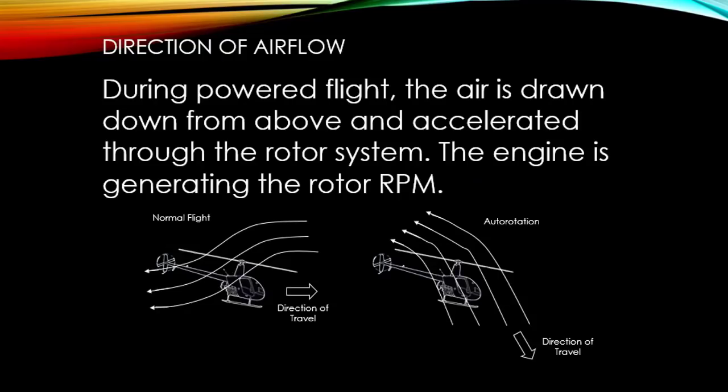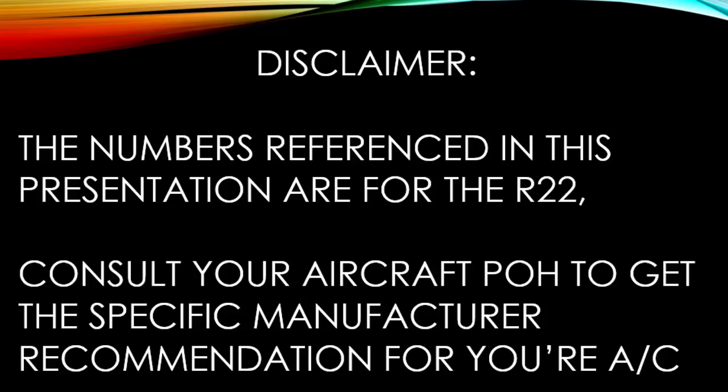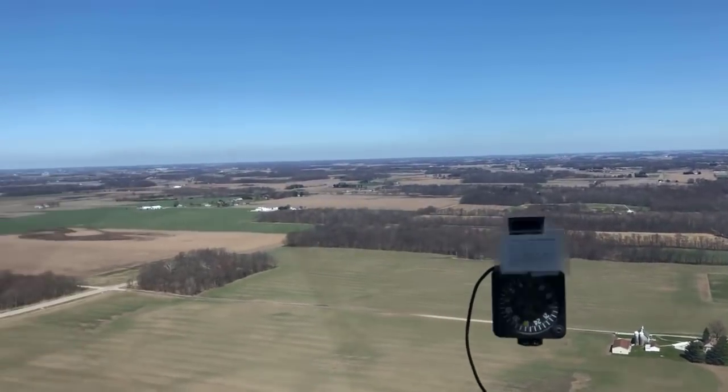That airflow is going to change when we go from forward flight to descending. The airflow is going to change and start going up through the rotor system, driving the rotor system. We've taken away the engine power, we start to descend, and the upward airflow keeps the blades spinning — actually makes them speed up. So depending on what you're flying, you might be entering at 60 knots, 70 knots — it depends on the aircraft.